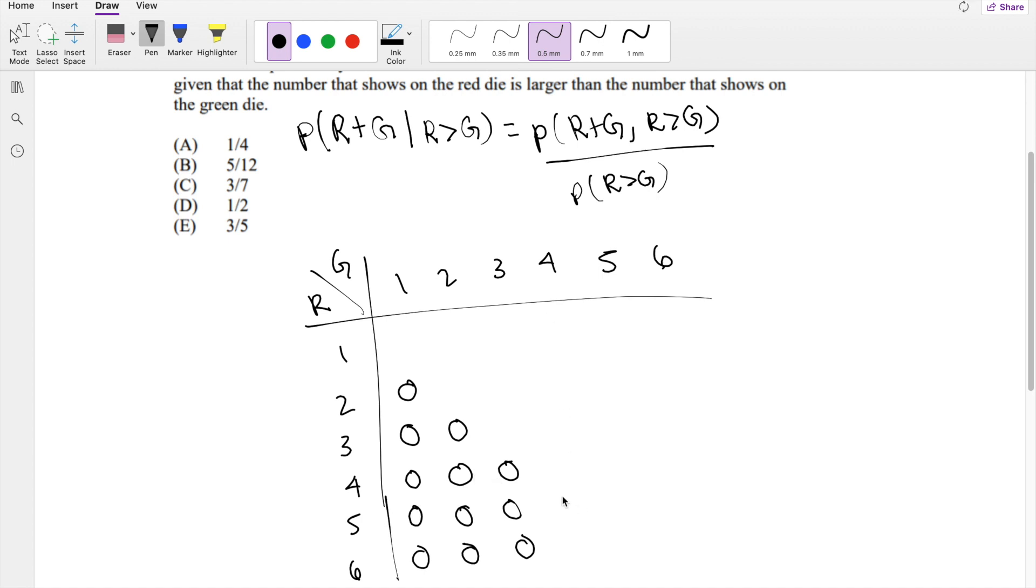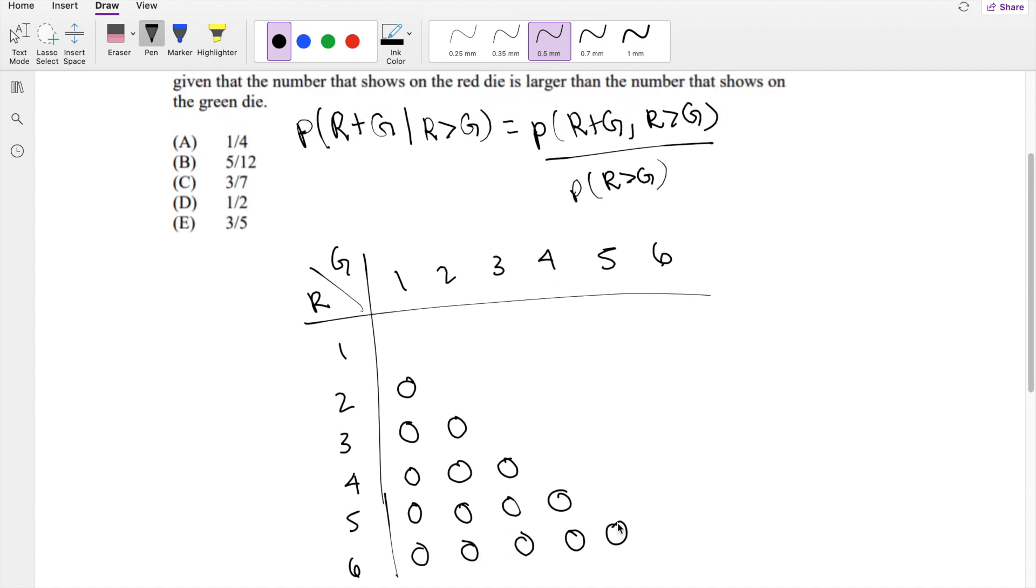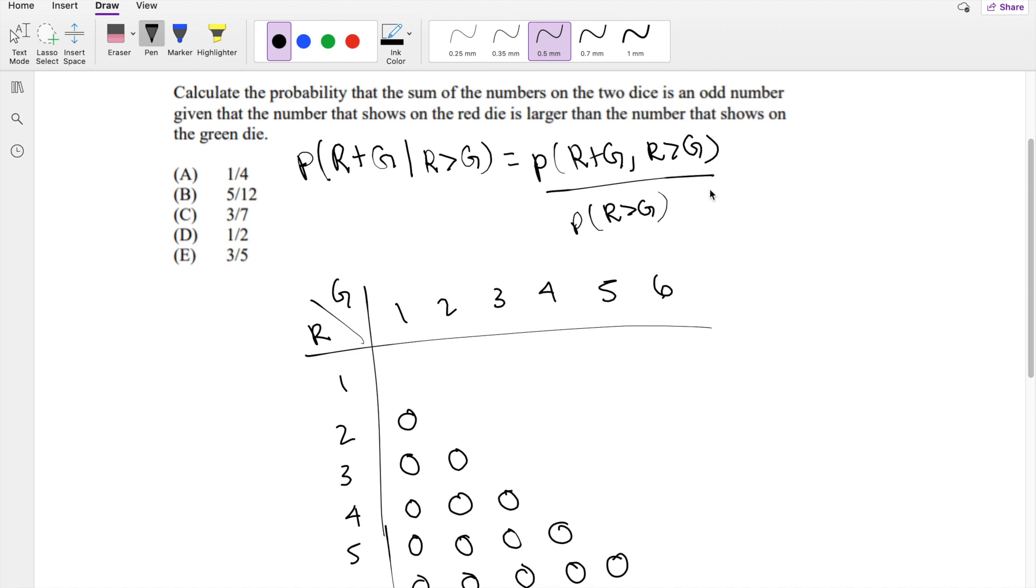4 is not greater than 4, but 5 is definitely greater than 4. And lastly, 6 is greater than 5. And yeah, so the probability that R is greater than G. The number of them is 1, 2, 3, 4, 5, 6, 7, 8, 9, 10, 11, 12, 13, 14, 15. So the denominator is 15.